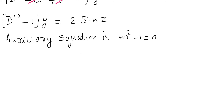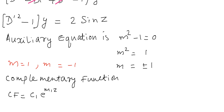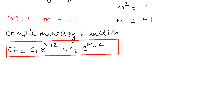m² − 1 = 0 gives m² = 1, therefore m = ±1. The roots are real and distinct. To find the complementary function, we use the formula c₁e^(m₁z) + c₂e^(m₂z). Substituting m₁ = 1 and m₂ = −1, we get the complementary function as c₁e^z + c₂e^(−z).